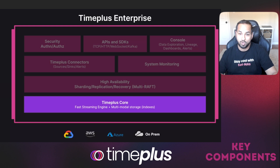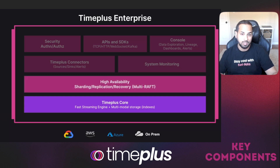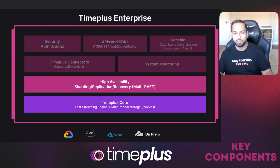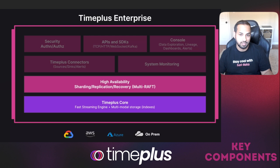At the bottom, we have TimePlus Core, which is the equivalent of Proton. It has our fast streaming engine, with a lot of performance and memory optimizations. On top of that, we built a high availability layer, which allows multiple TimePlus Core engines to be connected together as one cluster. We have sharding, replication, and recovery via the Multigraft consensus protocol.